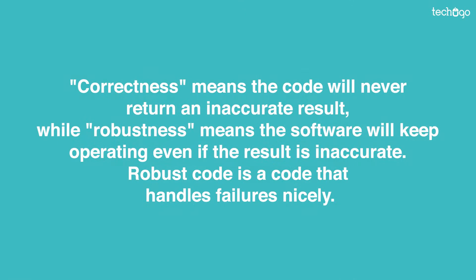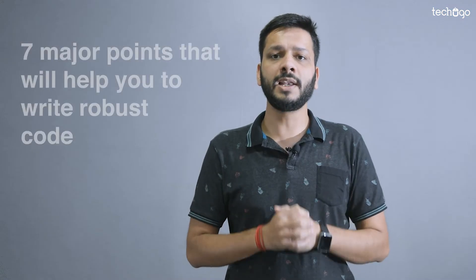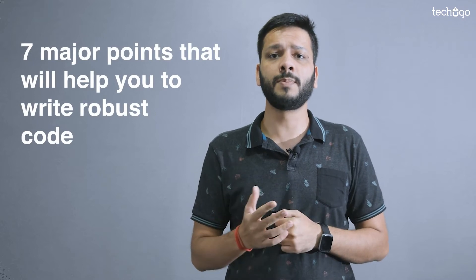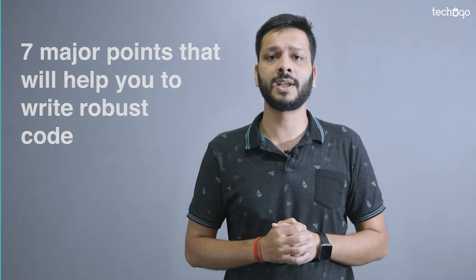Generally, developers focus on correctness of the code. But it is not mandatory that if your code is correct then it is robust too. Correctness means your code will never return an inaccurate result. However, robustness means your system will keep operating even if it returns an inaccurate result. So, robust code handles the failures nicely. Let me tell you 7 major points that will help you to write robust code for your application.